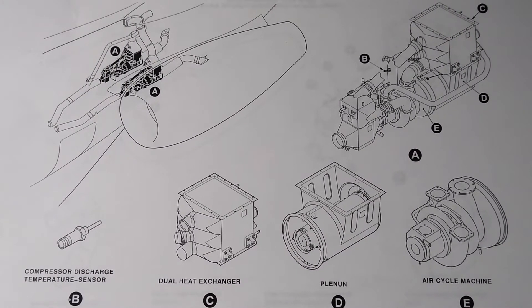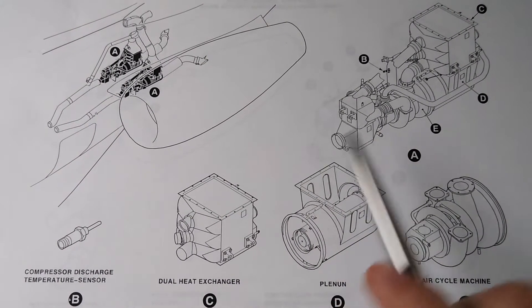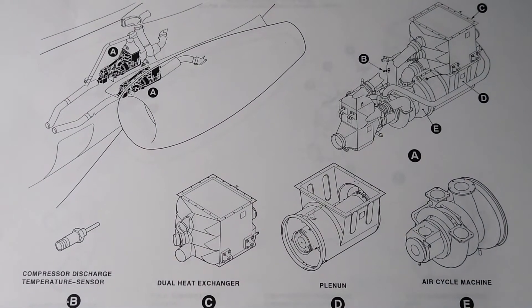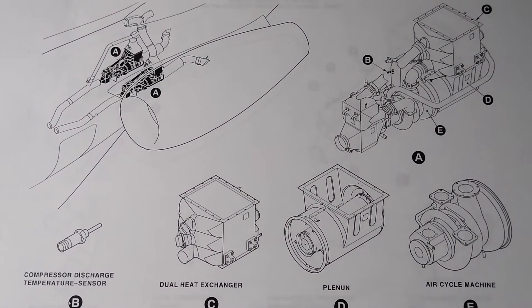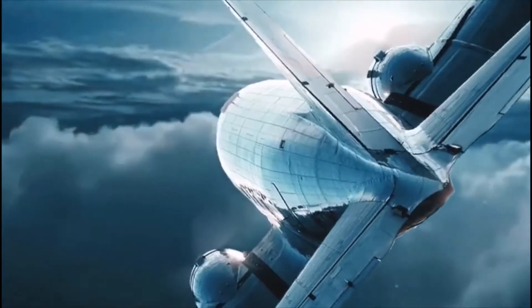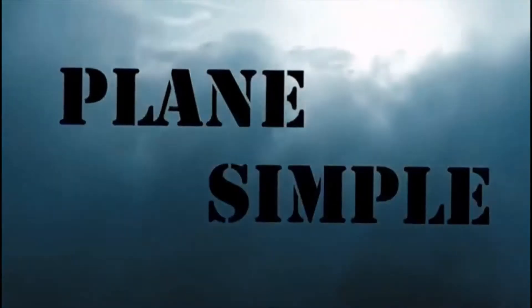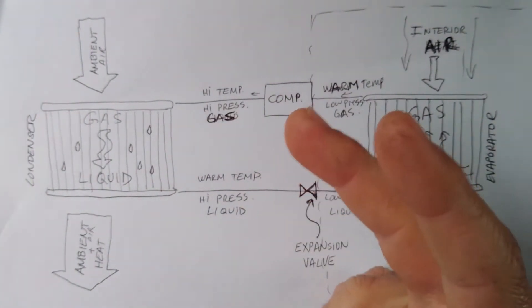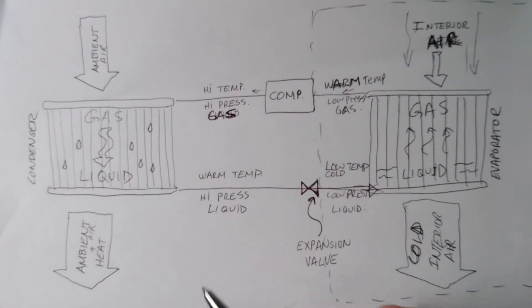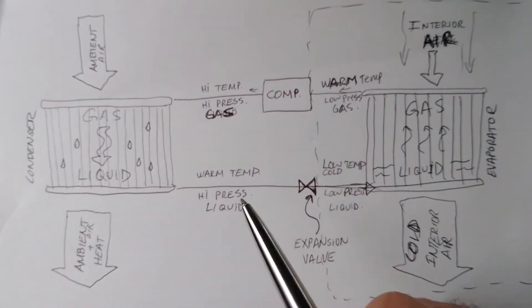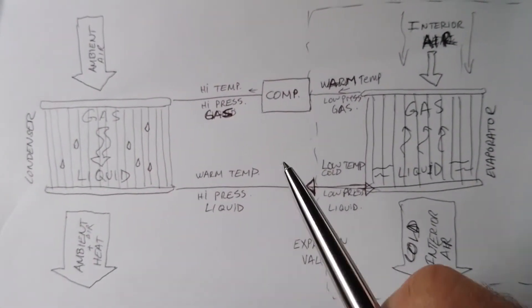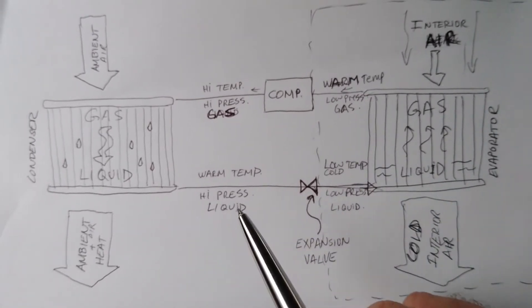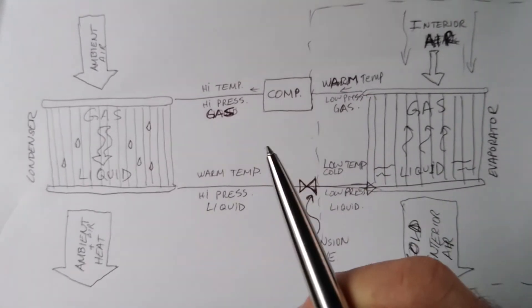Hello everybody, welcome back to Plain Simple. Today we're tackling the question of air conditioning on aircraft. In this video we're going to be talking about two different types of air conditioning systems. The goal for both is the same — to cool the air or to transfer heat — but they do it in two separate and different methods.